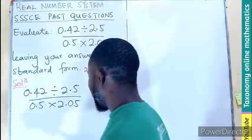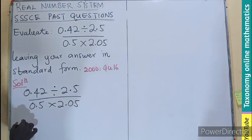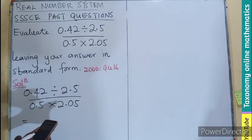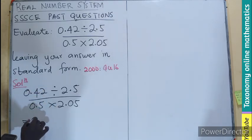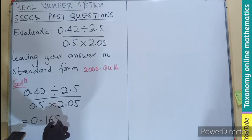Or we just perform the numerator by division, 0.42 divided by 2.5. That will give us 0.168.